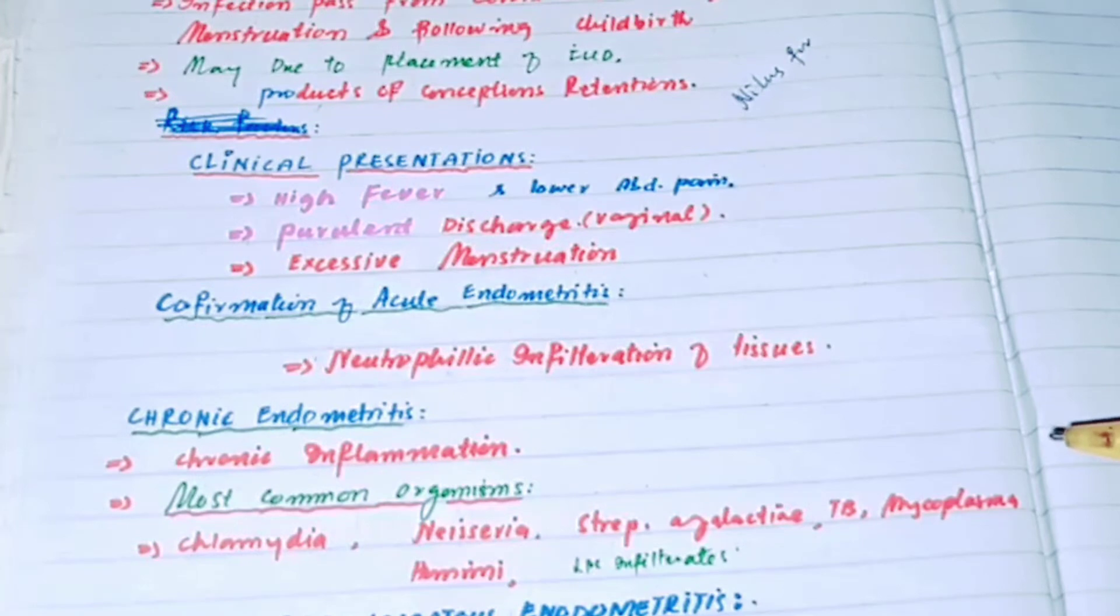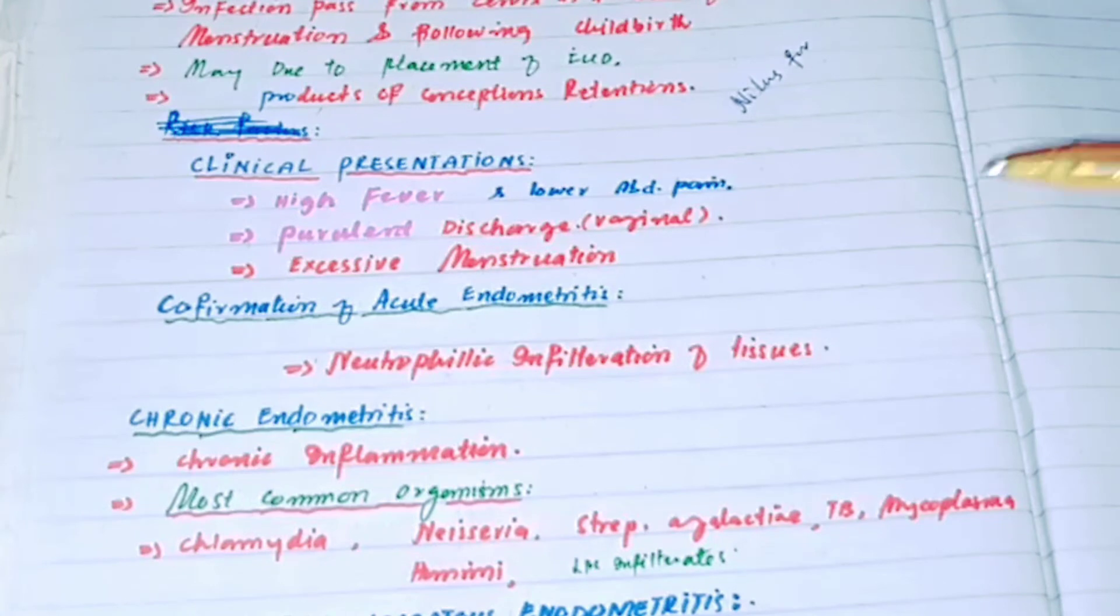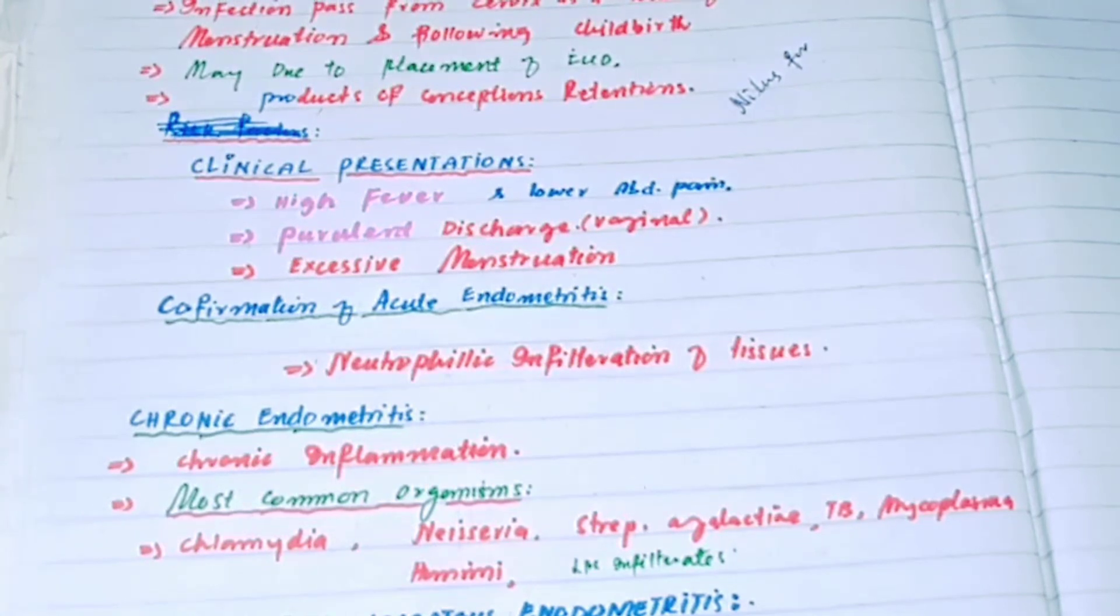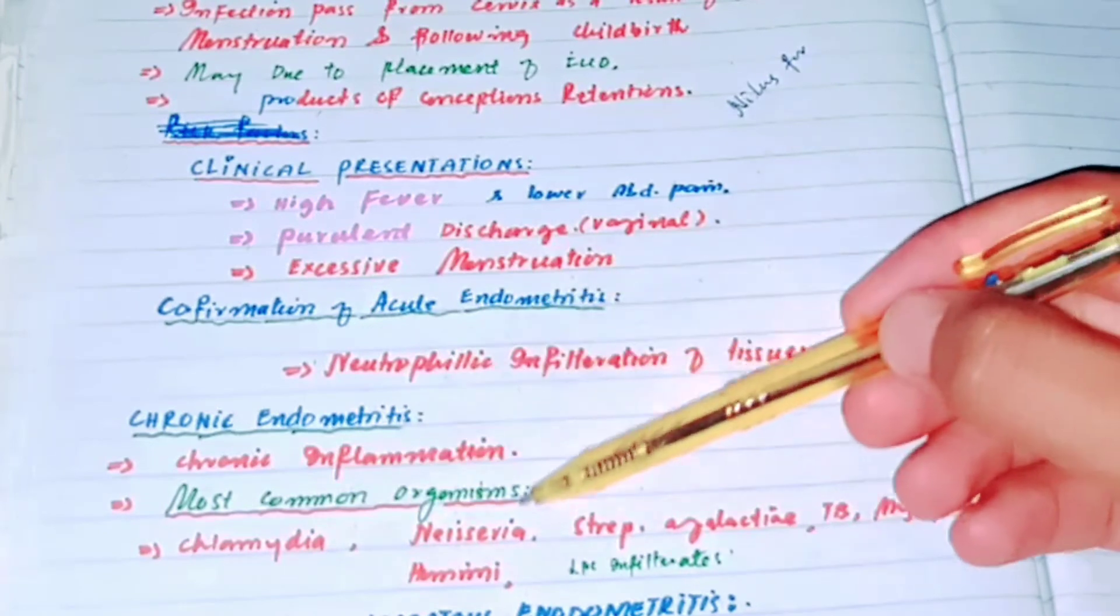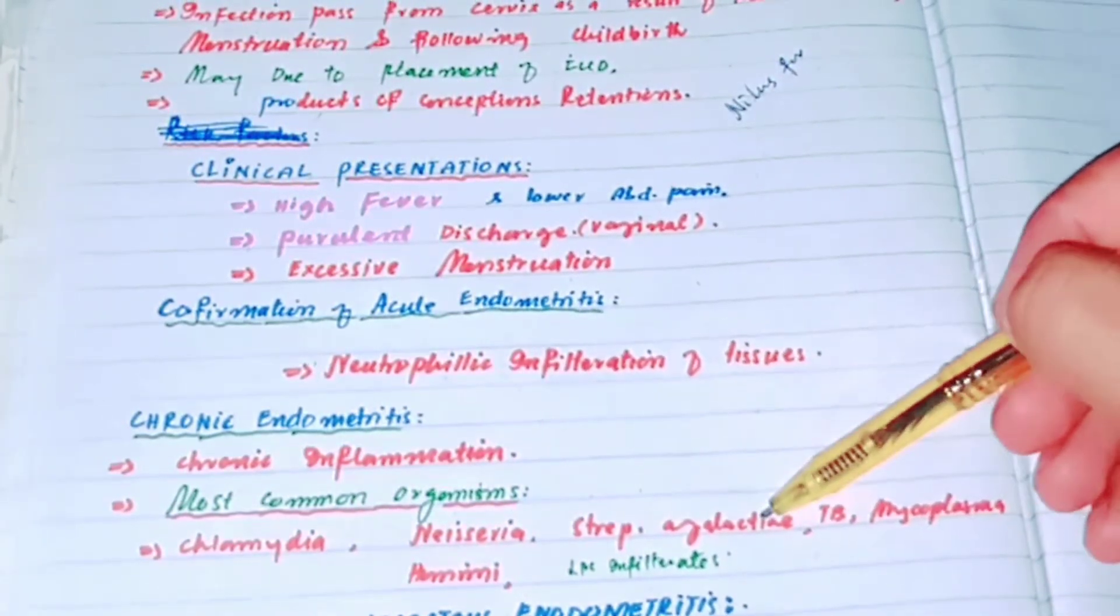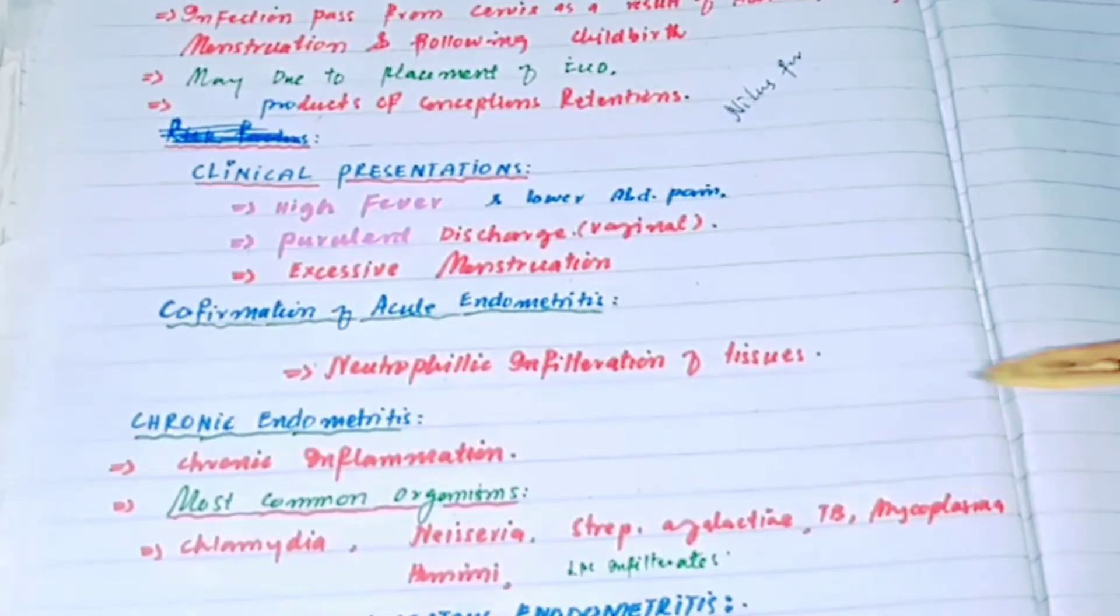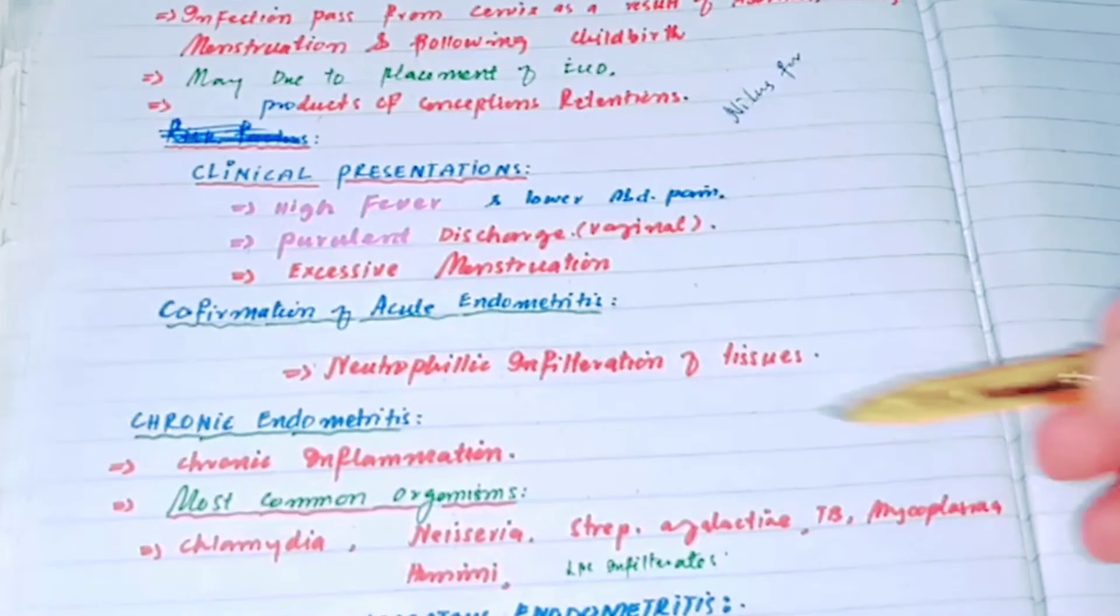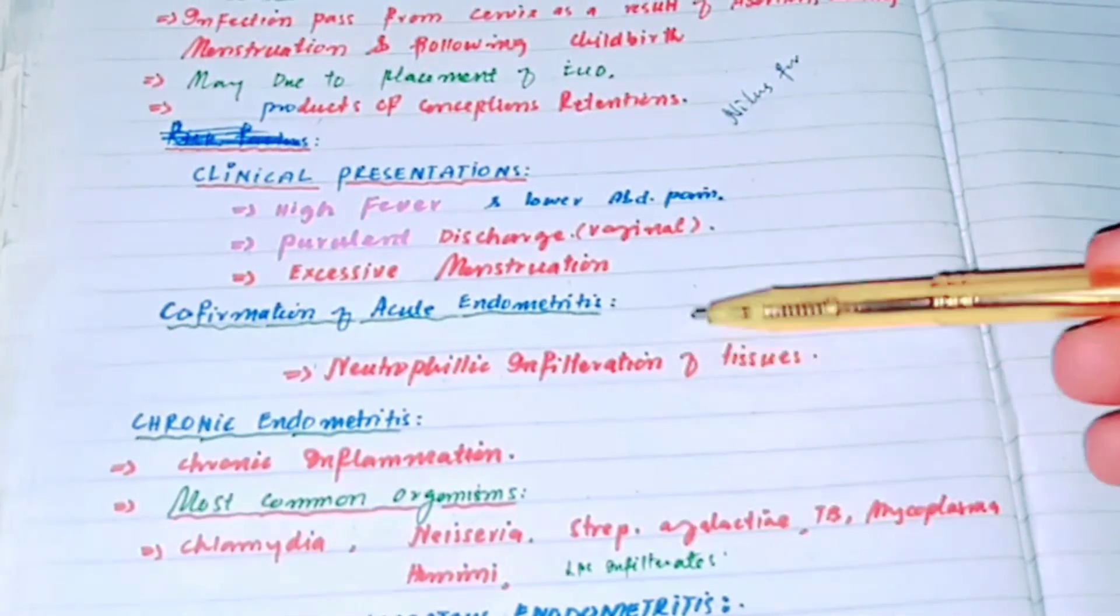Chronic endometriosis is chronic inflammation of the endometrium. The most common organisms that cause chronic endometriosis include Chlamydia, Neisseria gonorrhoeae, Streptococcus, Mycobacterium tuberculosis, and Mycoplasma. These organisms cause chronic endometriosis.